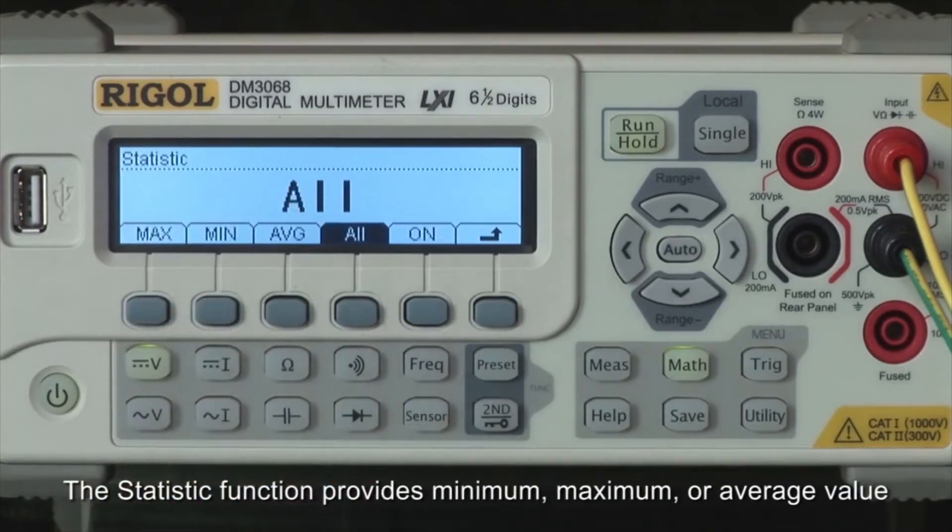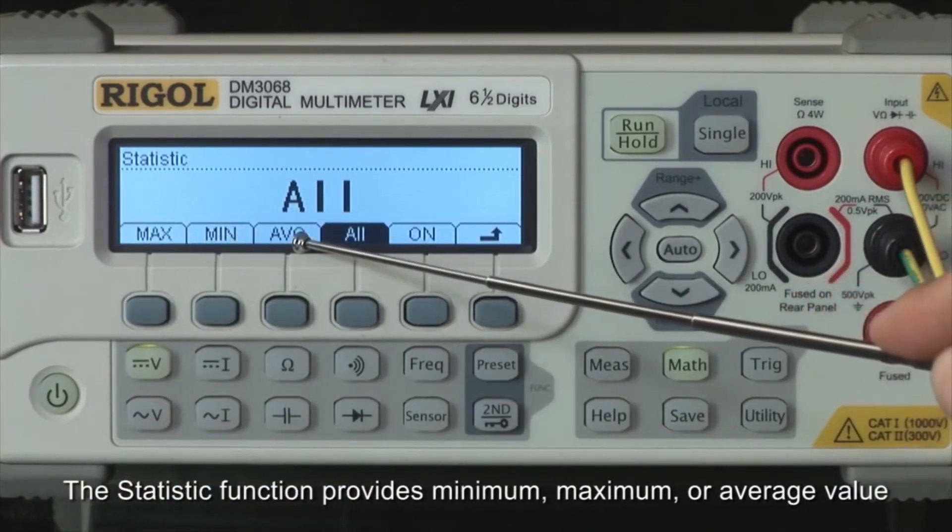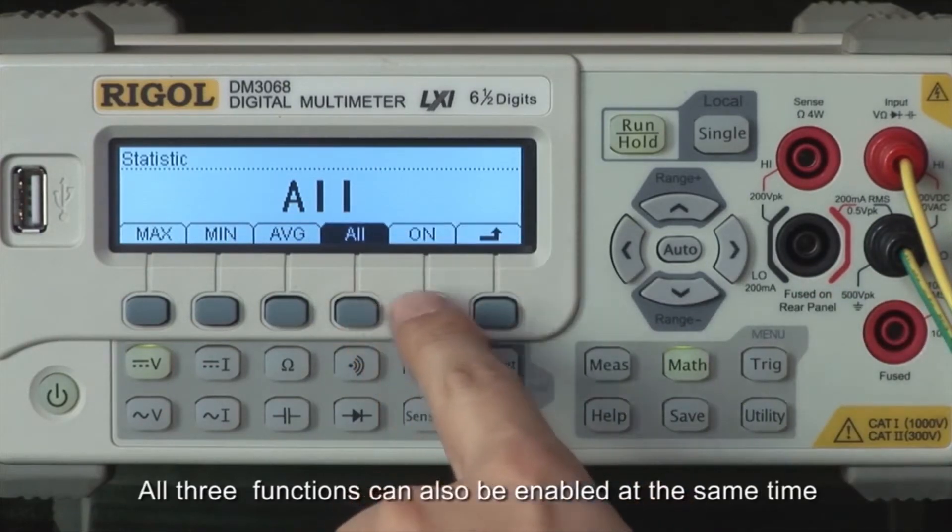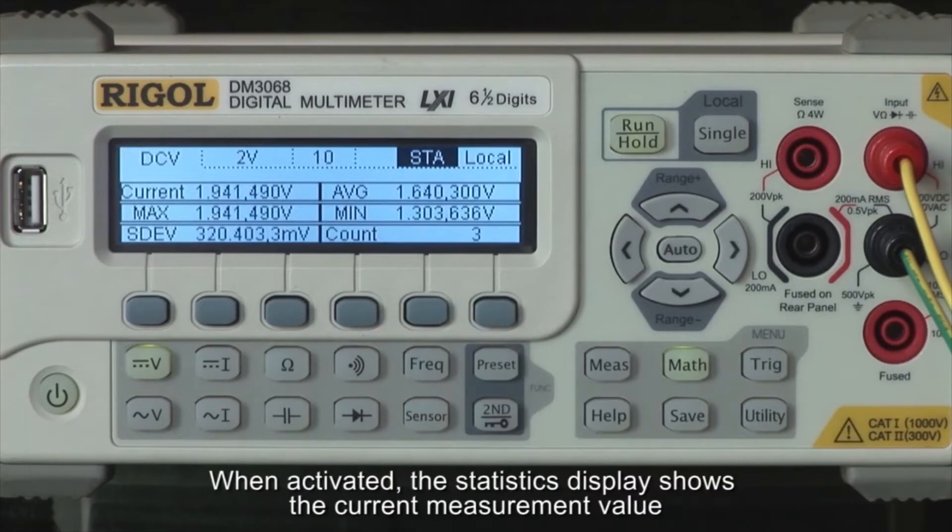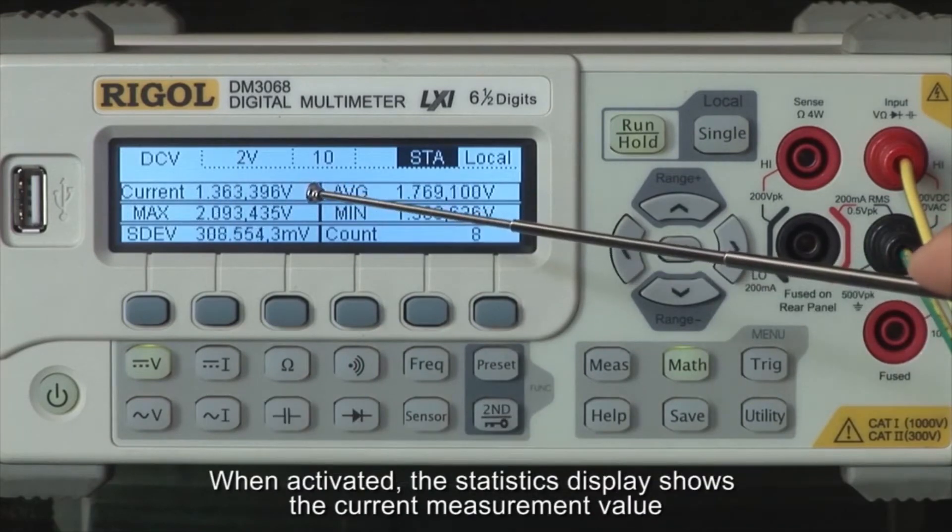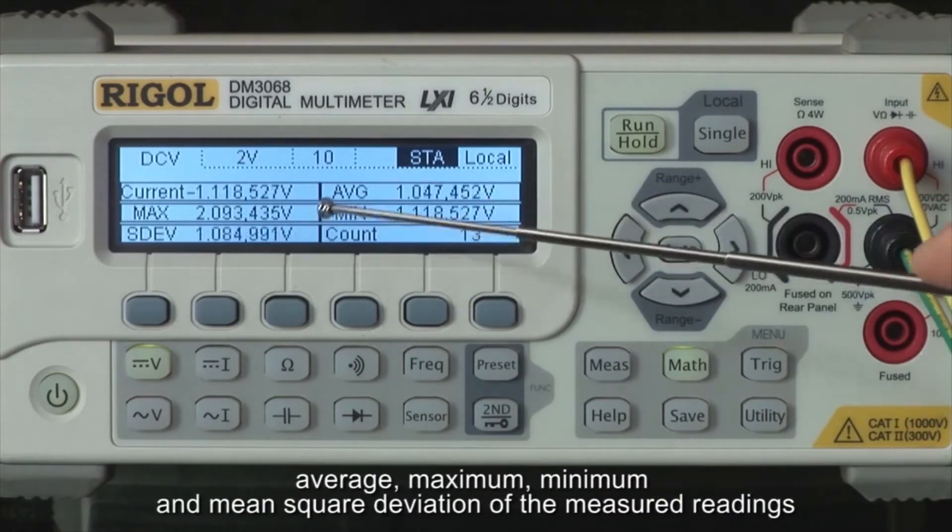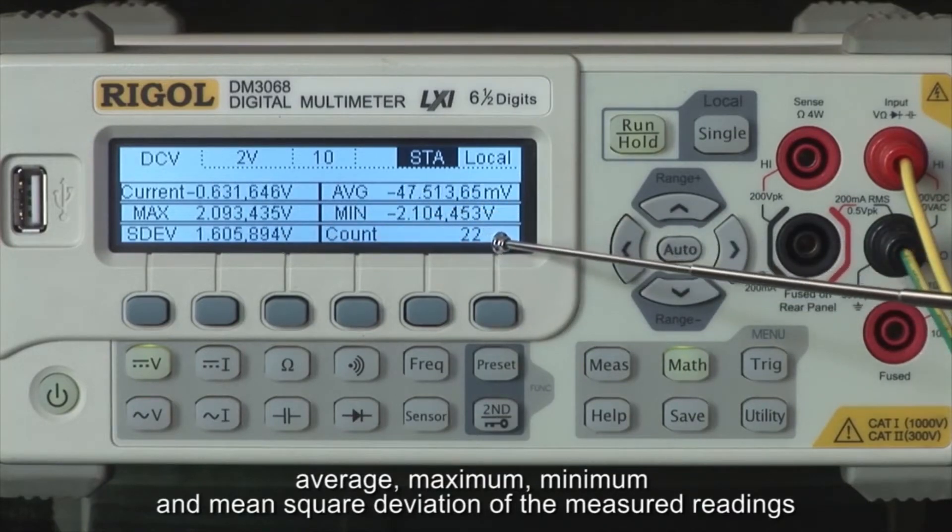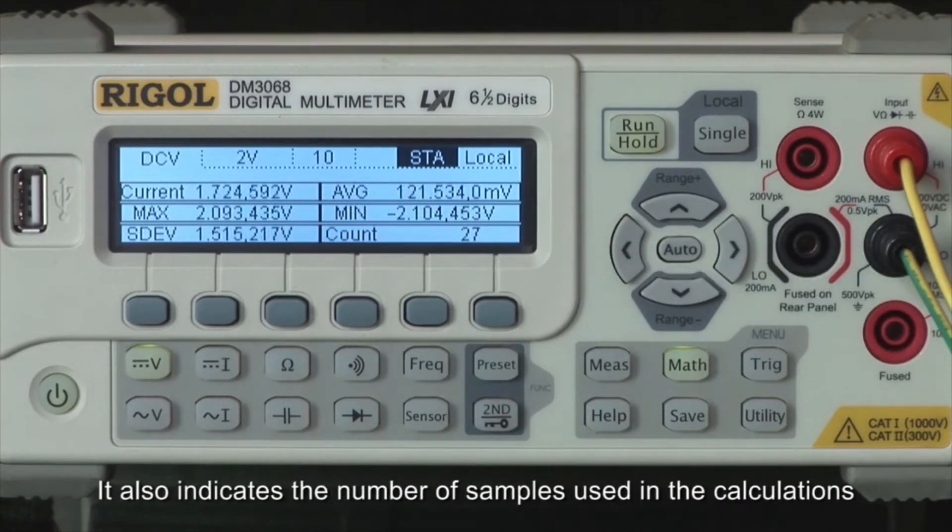The statistic function provides minimum, maximum, or average values. All three functions can also be enabled at the same time. When activated, the statistics display shows the current measurement value, average, maximum, minimum, and mean squared deviation of the measured readings. It also indicates the number of samples used in the calculations.